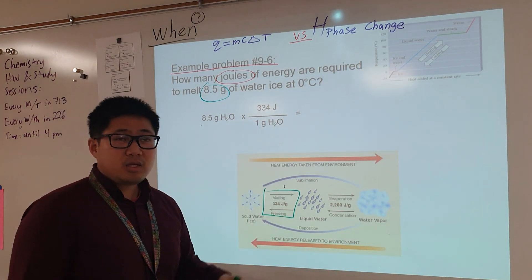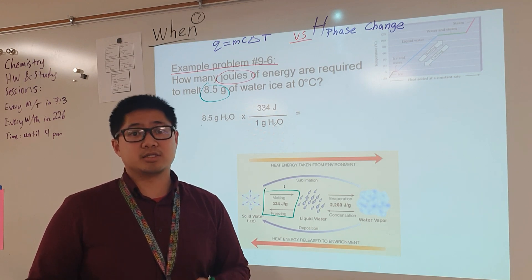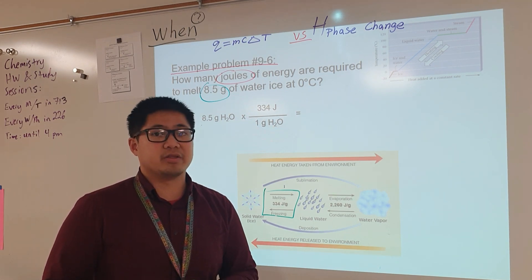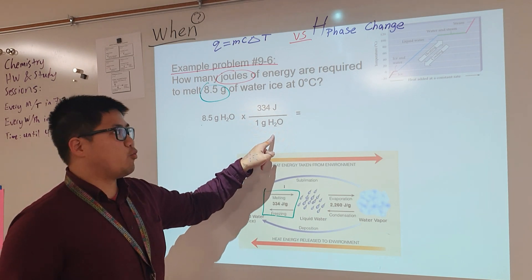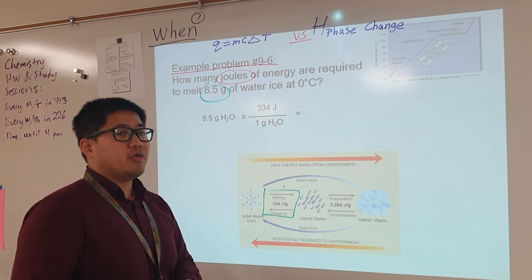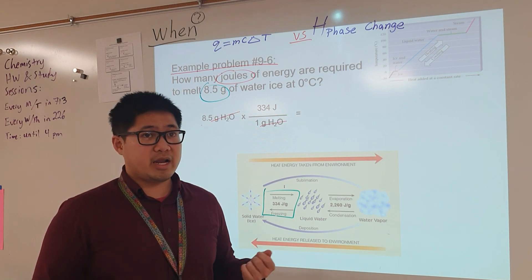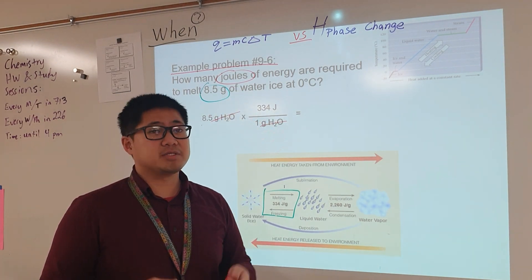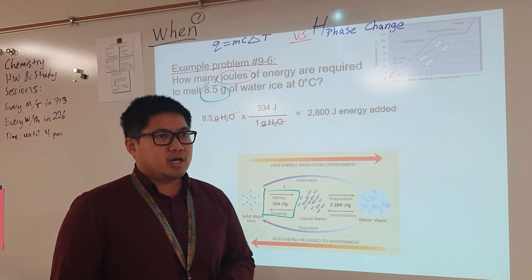Before we do the math, Mr. Pham tells his class that when doing dimensional analysis, we need to show everything. Show the units working out first before you crunch in the numbers. We have grams of water on top and grams of water on the bottom. They cancel out. Before we crunch the numbers, what units do I end with? Joules. That's what I really want at the end. Now I feel justified to crunch in the numbers. 2800 joules of energy needed.